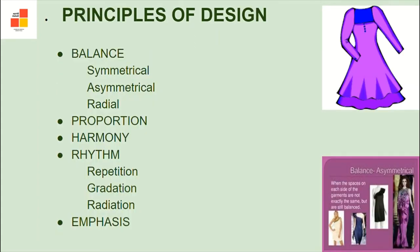Let's talk about the principles of design one by one. First is balance — a state of equilibrium, defined as equal distribution of weightage from the central point of the garment. The dress should be balanced both vertically and horizontally. Balance is of three types: symmetrical or formal balance, which occurs when the design has equal elements on both sides, giving a feeling of stability and dignity; asymmetrical or informal balance, where details differ on each side of the imaginary vertical line bisecting the body — body irregularities can be camouflaged this way; and radial balance, which occurs when design elements radiate from a central focal point.